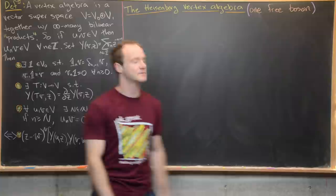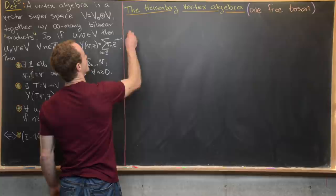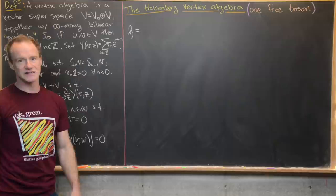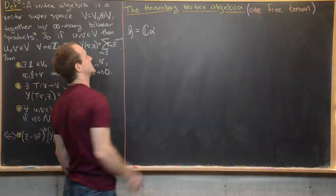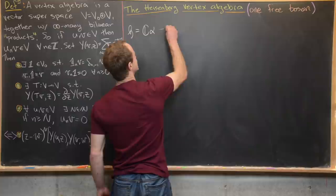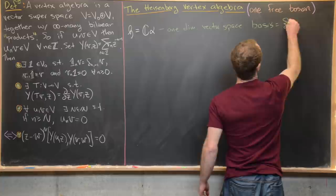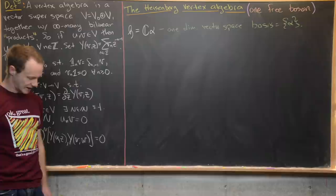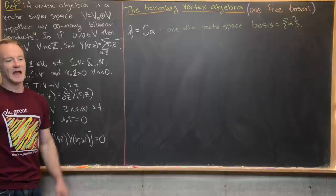We're going to start with a one-dimensional vector space H with basis vector alpha, so we write it as ℂ·α. We then view alpha as an abelian Lie algebra — any vector space can be thought of as a trivial Lie algebra where the Lie bracket is zero for all vectors. Then we form the affinization of alpha, sometimes called alpha-hat.